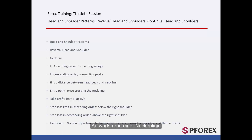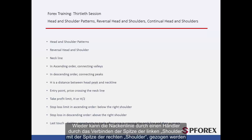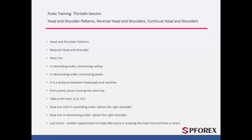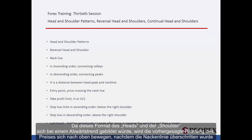Neckline uptrend. Again, the neckline can be drawn by a trader through connecting the peak of the left shoulder to the peak of the right shoulder. The left peak is between left shoulder and head, while right peak is between head and right shoulder. Since this format of head and shoulder would be formed on a downtrend, the predicted direction of the price will be upward after it passes the neckline.